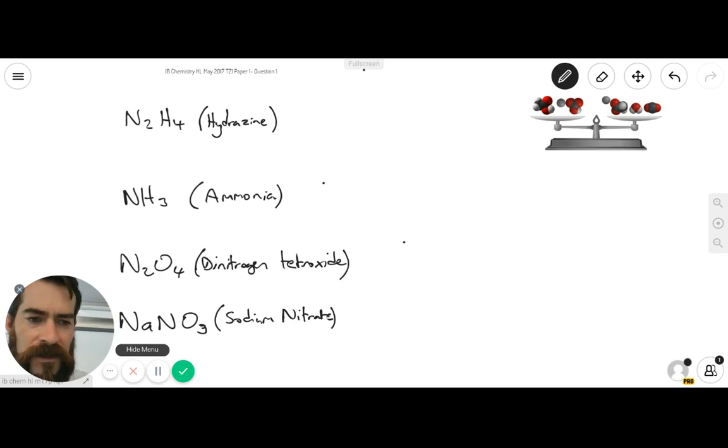So nitrogen, I'll just write all these over here, has a relative atomic mass of 14. Hydrogen has a relative atomic mass of 1. Now I'm just rounding these to the nearest whole number, because when you're doing questions in multiple choice, you don't have a calculator, so you're not typically going to be working with relative atomic masses to two decimal places as given to you in your periodic table.